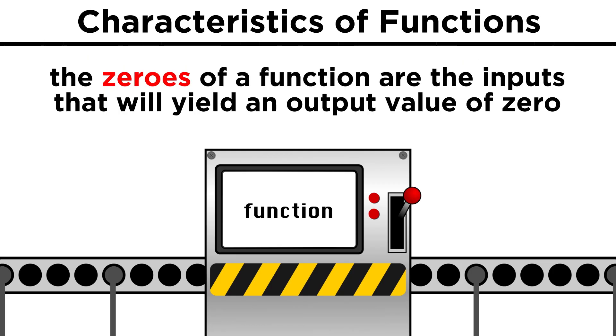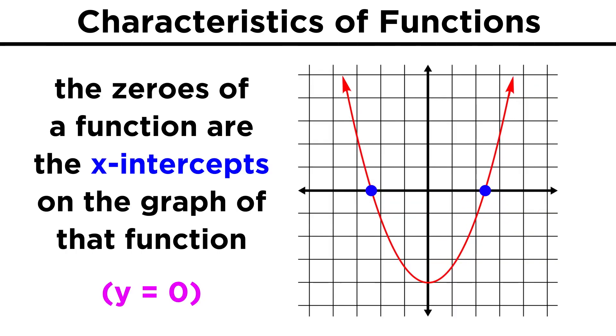We will also sometimes want to identify the zeros of a function. These are the input values that make the function equal to zero, which we can identify graphically as the x-intercepts. Wherever the function crosses the x-axis, that value of x is producing a y value of zero, so that is a zero of the function.